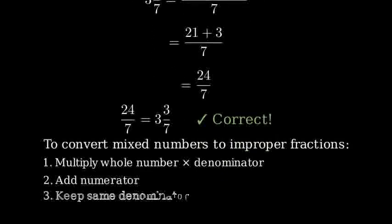Remember, to convert a mixed number to an improper fraction, multiply the whole number by the denominator, add the numerator, and keep the same denominator.